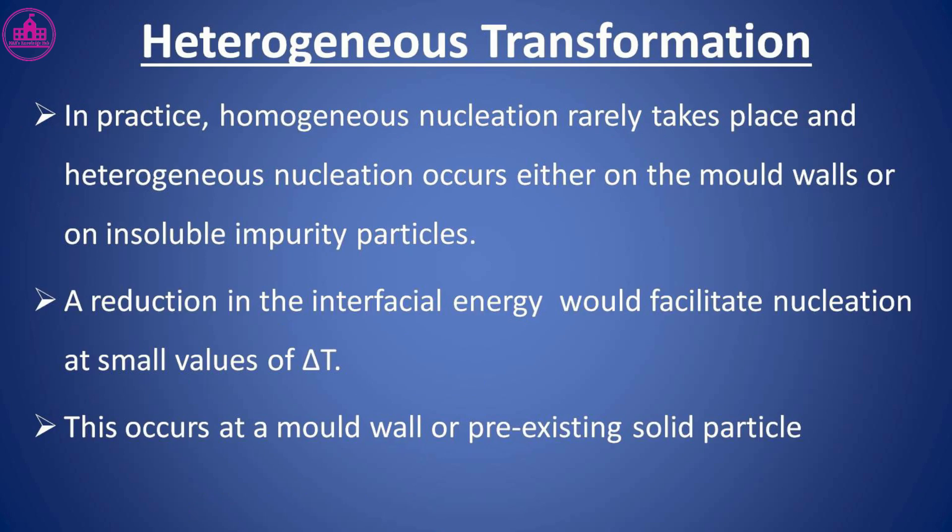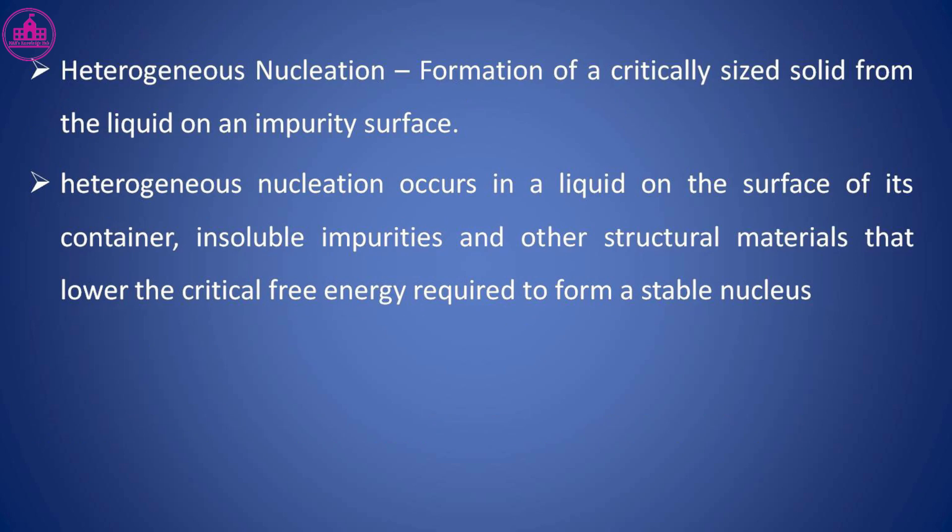Heterogeneous transformation: In practice, homogeneous nucleation rarely takes place; instead, heterogeneous nucleation occurs either on the mold walls or on insoluble impurity particles. A reduction in the interfacial energy would facilitate nucleation at small values of ΔT, and this occurs at a mold wall or pre-existing solid particle. Heterogeneous nucleation is the formation of a critically sized solid from the liquid on an impurity surface, occurring in a liquid on the surface of its container, insoluble impurities, and other structural materials that lower the critical free energy required to form a stable nucleus.